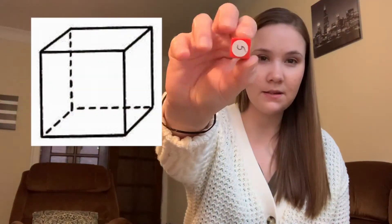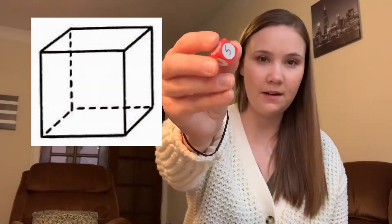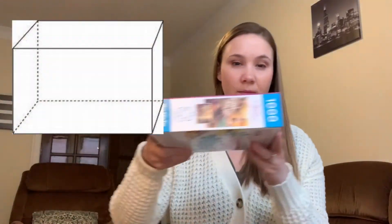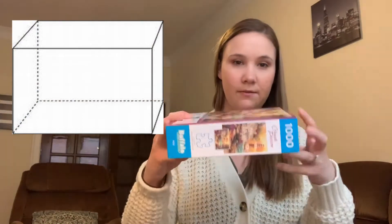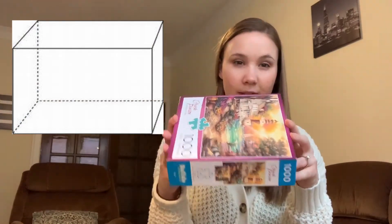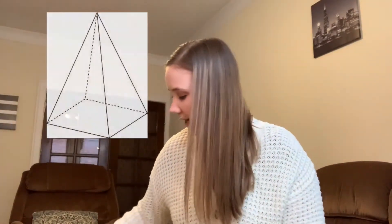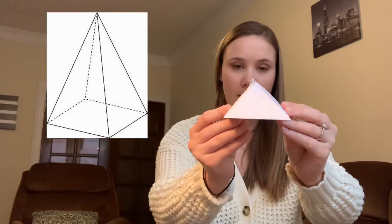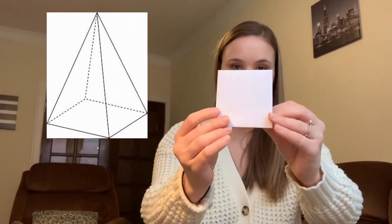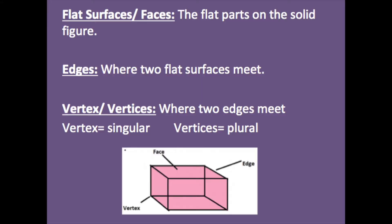I found a dice, which is the shape of a cube. I found a puzzle box, which is the shape of a rectangular prism. I couldn't find an object for the last one, so I made it — here is a pyramid.